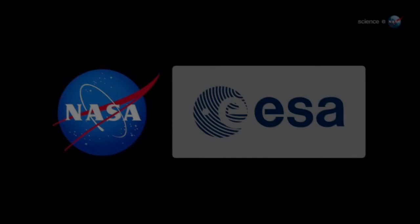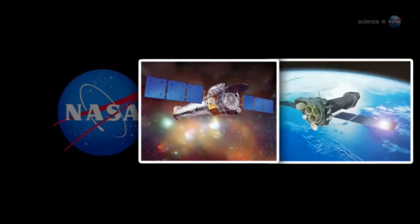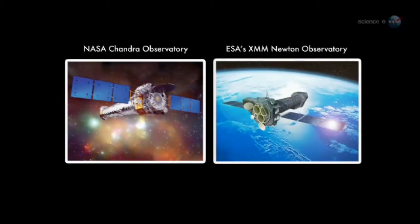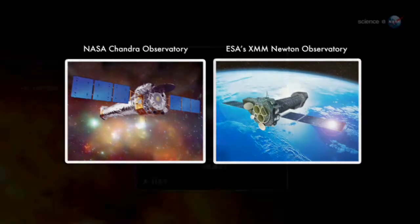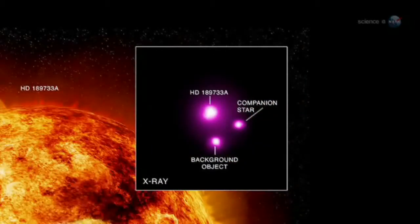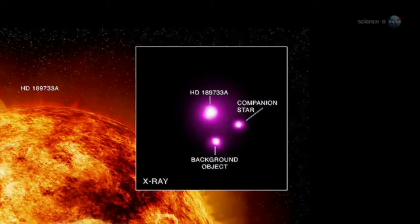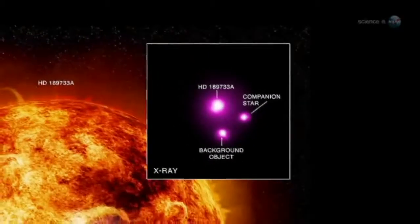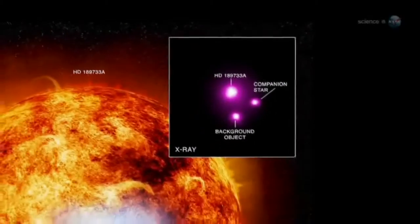The newest observations come from a pair of X-ray observatories. NASA's Chandra and ESA's XMM-Newton watched HD 189733b transit its star and detected a drop in X-rays three times deeper than the corresponding decrease in optical light. This means the outer atmosphere is larger than anyone expected.